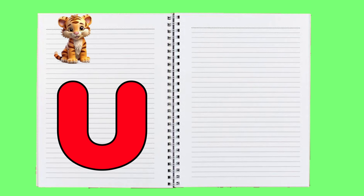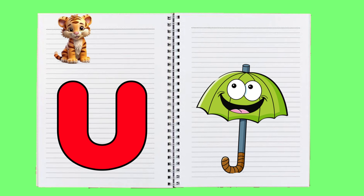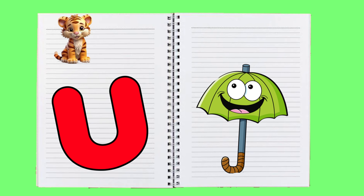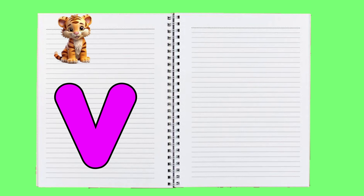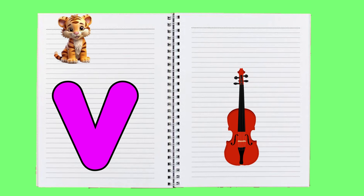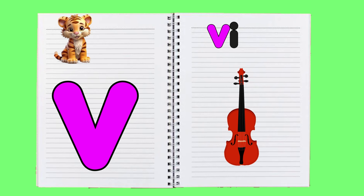U is for umbrella, u-u-umbrella. V is for violin, v-v-violin.